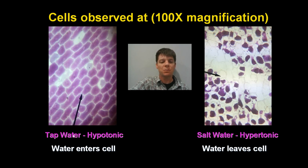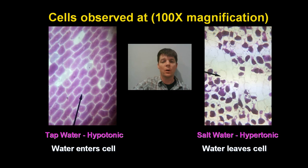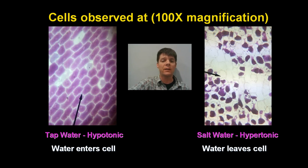To summarize: when we have cells placed into a hypotonic solution like tap water, water is going to enter the cells. The cell membrane is then going to be filled with water, completely filling the space inside of the cell wall. When cells are placed into a hypertonic solution like salt water, water is going to leave the cell — it's like we're removing water from the inside of that bag — so the cell membrane space is going to shrink and not completely fill the inside of the cell. If we had cells in an isotonic solution, that would mean the concentration of water outside the cell is the same as on the inside. There wouldn't be any net change in water levels, but water would flow both in and out of the cell at equal rates.